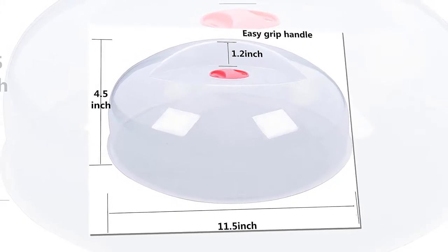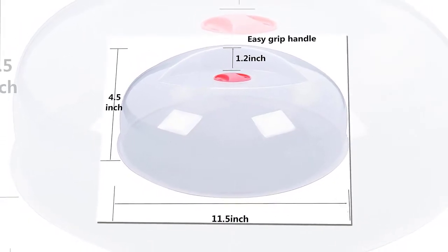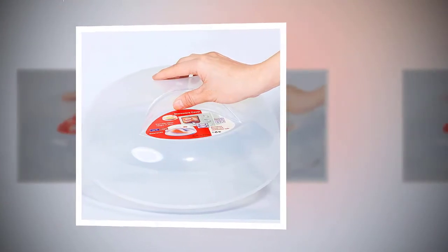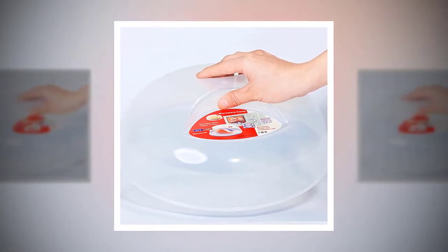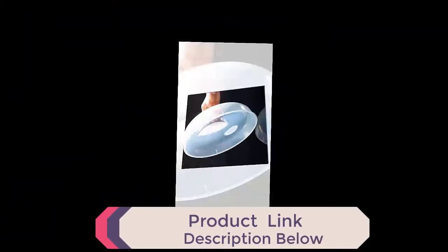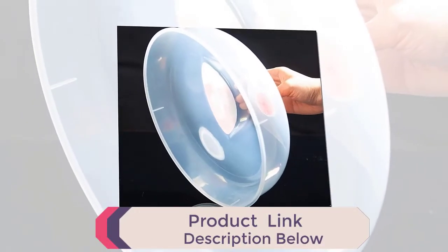Convenient easy-to-turn vent allows moisture to escape, keeps food moist while splatters and mess are contained, and helps cook your food more evenly. A greener way to cover food that does away with wraps and reduces waste.